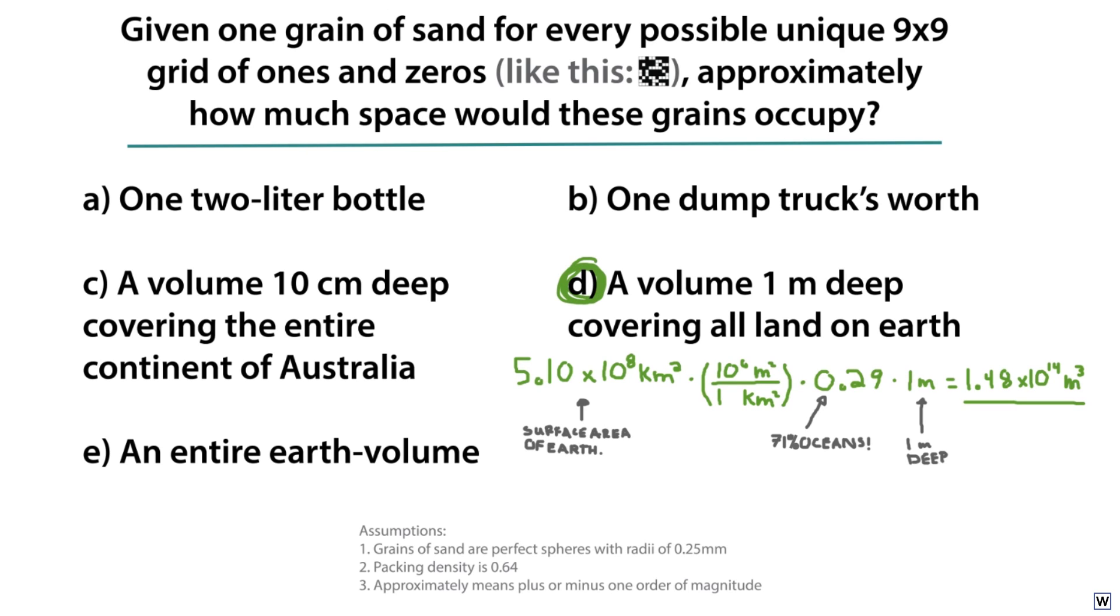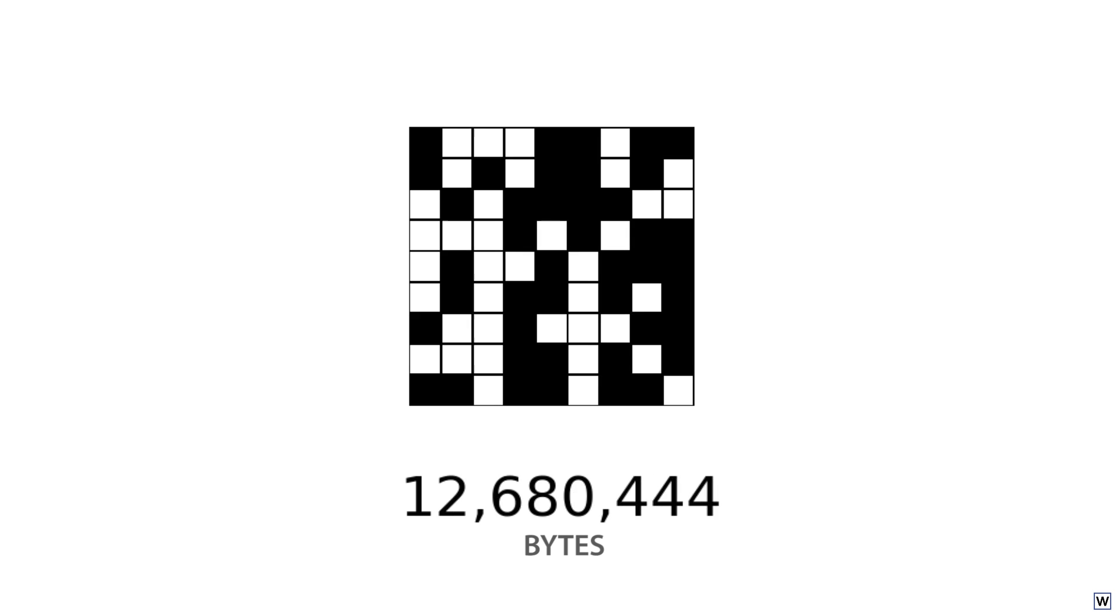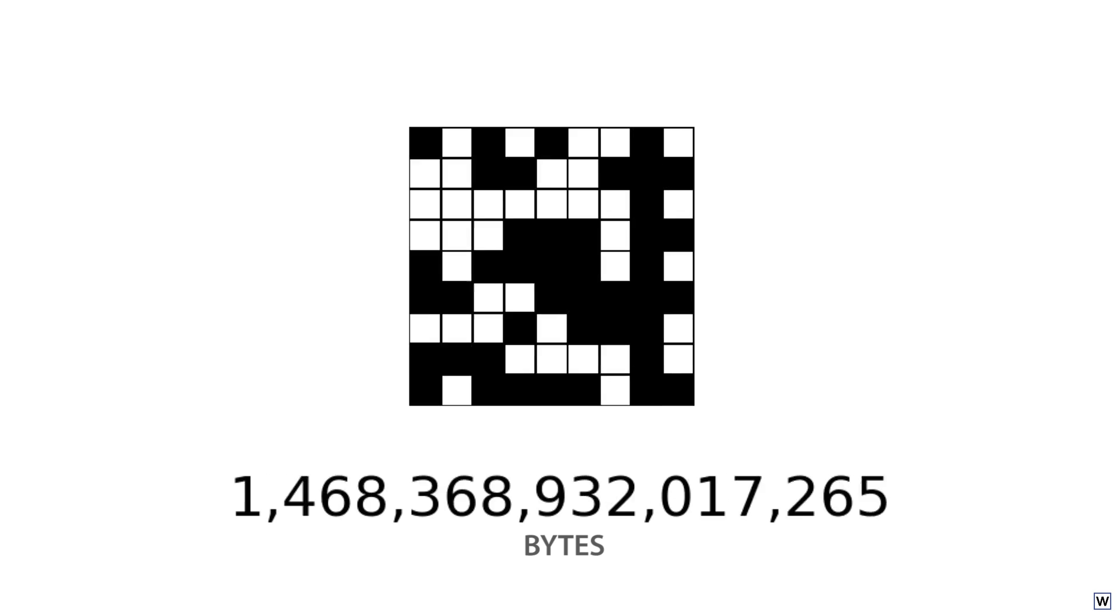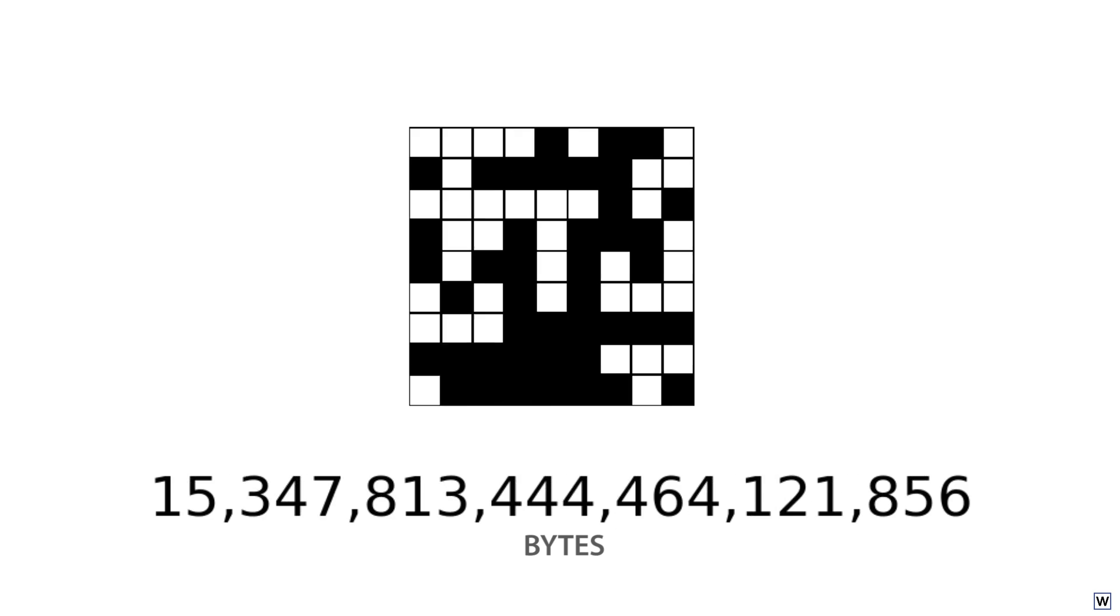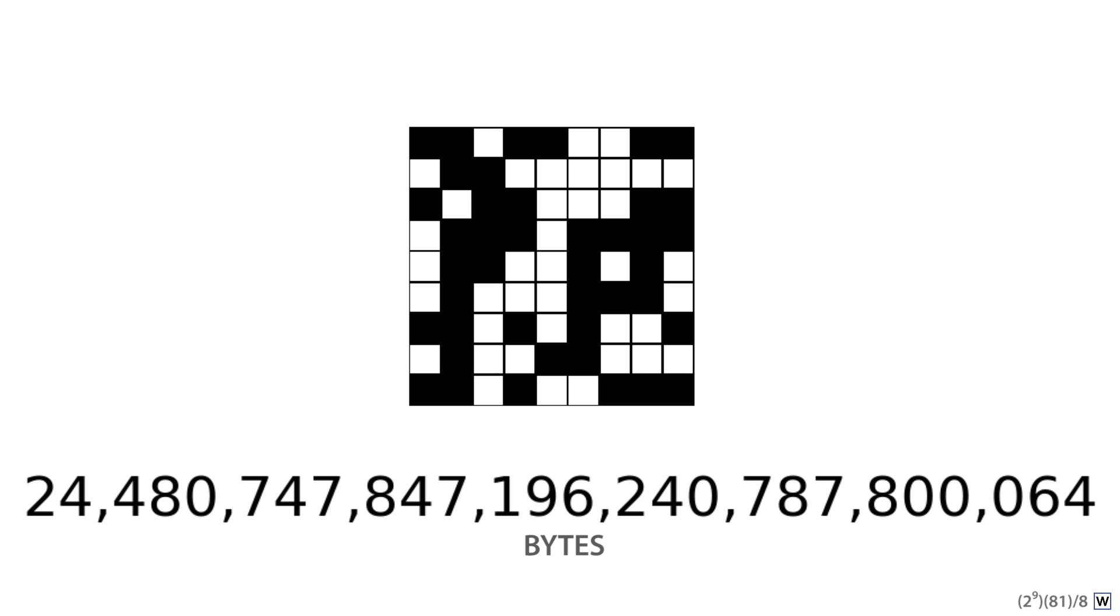Despite the relatively simple mathematics, grasping concepts like these intuitively is tough. The inherent variability in our tiny binary slice of the universe, a 9x9 grid of zeros and ones, is staggering. If we stored every possible example on a computer, this would require 25 yottabytes, more storage than is available on all the computers humans have ever built, combined.